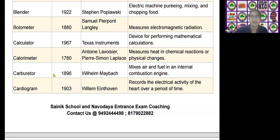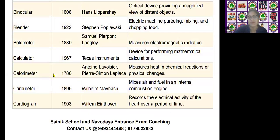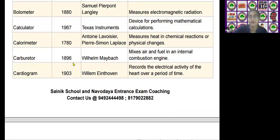The next scientific device is the cardiogram, invented by William Einthoven in the year 1903. It is used as a record of the electrical activity of the heart over a period of time.